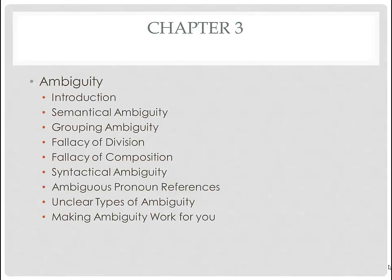Now, ambiguity can also defeat communication unintentionally. There are cases where people do it accidentally — in that case, people are often willing to cooperate to solve that problem. In other cases, people are being intentionally ambiguous, in which case it can be a bit of a struggle. Now, there are a variety of flavors of ambiguity, and the first particular one is what is known as semantical ambiguity.